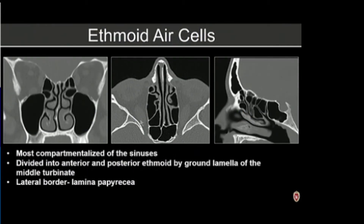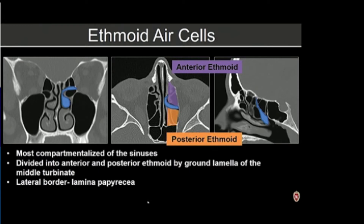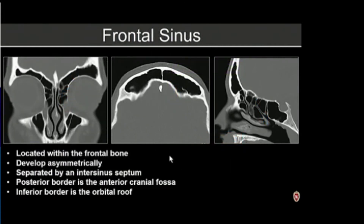The ethmoid air cells are the most compartmentalized of the sinuses, divided into anterior and posterior by the ground lamella of the middle turbinate, which gives them different drainage pathways. An important anatomic landmark is the lamina papyracea, which is paper thin — significant disease within the ethmoid air cells can easily extend into the adjacent orbit. The frontal sinus is located within the frontal bone, typically develops asymmetrically, is separated by the intersinus septum, with the posterior border being the anterior cranial fossa and the inferior border the orbital roof.